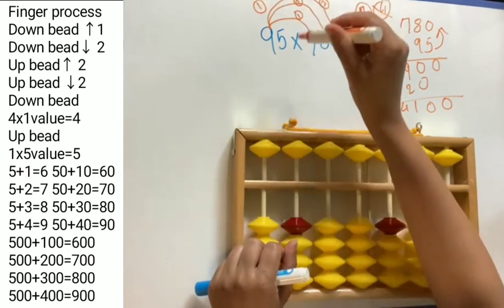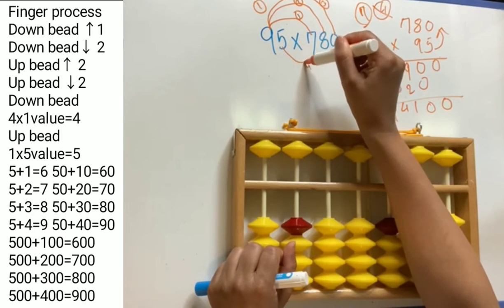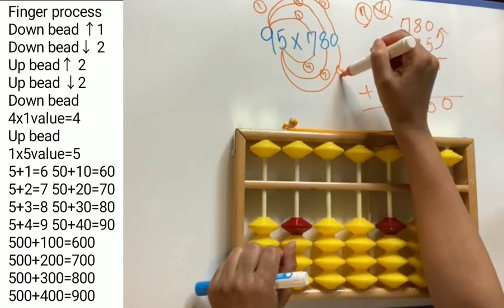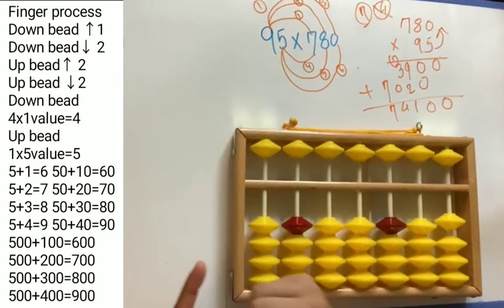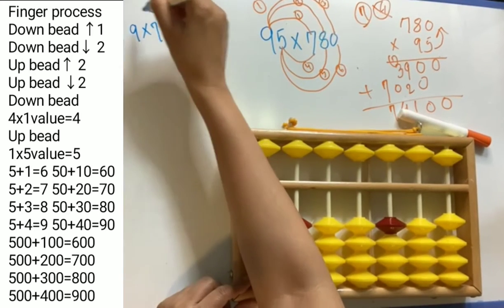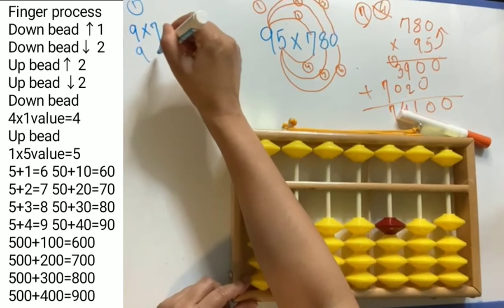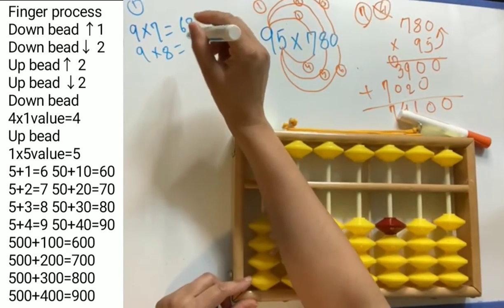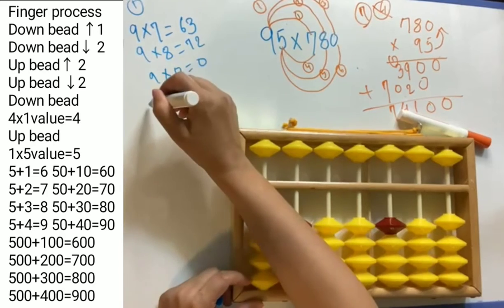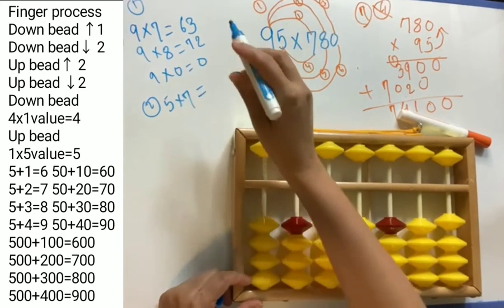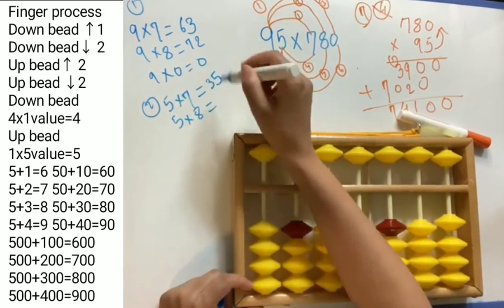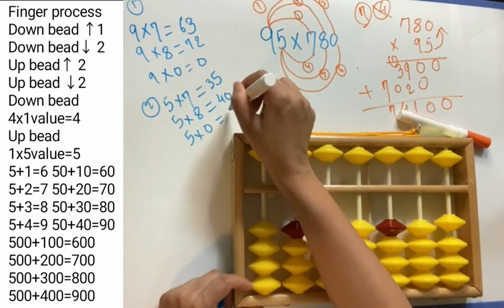This is the first group. In the second group: 5 × 7 is position 4, 5 × 8 is position 5, and 5 × 0 is position 6. So writing them down: first group is 9 × 7 = 63, 9 × 8 = 72, and 9 × 0 = 0. Second group is 5 × 7 = 35, 5 × 8 = 40, and 5 × 0 = 0.